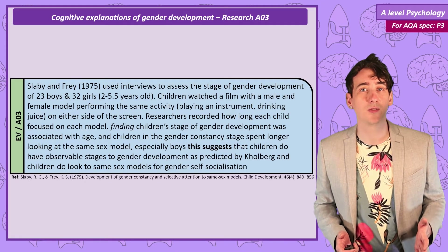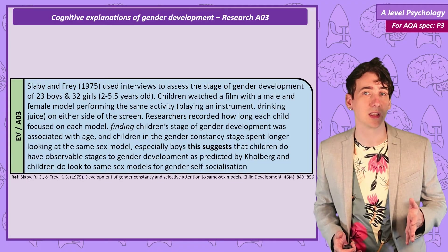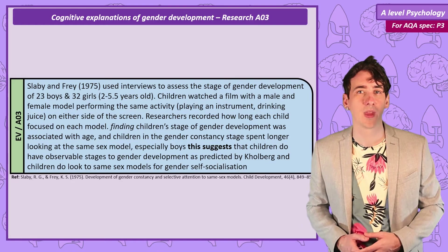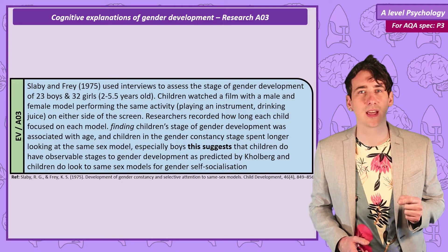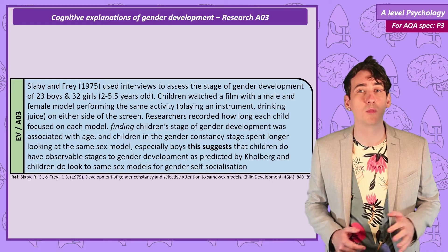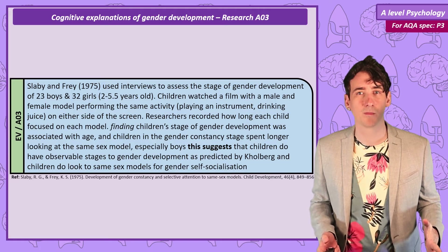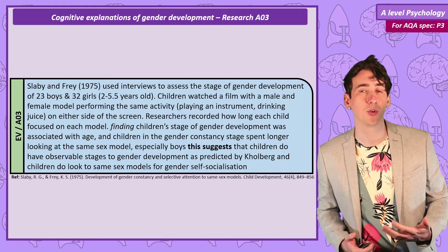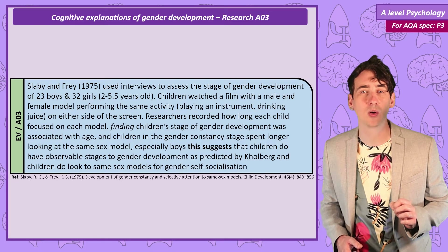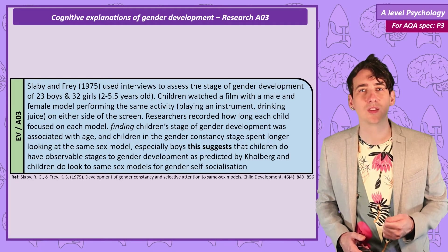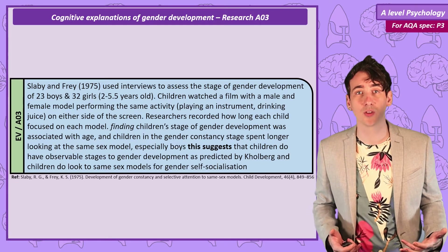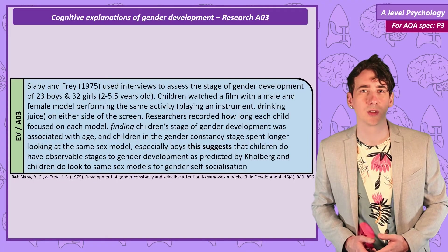As predicted, children when interviewed did fall into the identity, stability, and consistency stages, with older children in the later stages. And the children in the consistency stage spent longer looking at the same-sex model, but this effect was much stronger in boys. This suggests that children do pass through the stages predicted by Kohlberg and will selectively seek out and pay attention to same-sex models to learn social rules — what the researchers call self-socialisation.